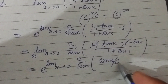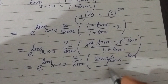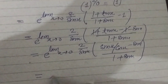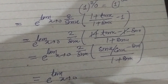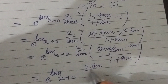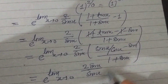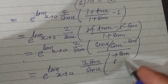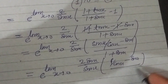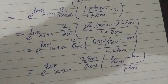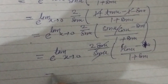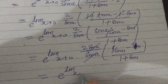Now substitute tan x = sin x over cos x. So tan x minus sin x becomes sin x over cos x minus sin x. Here sin x is common, so we get e to the power limit x tends to 0: 2 sin x times (1/cos x - 1) upon sin x, and sin x cancels.